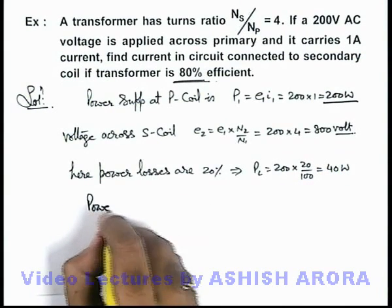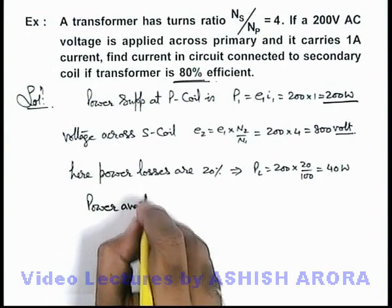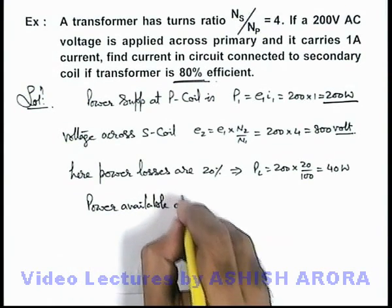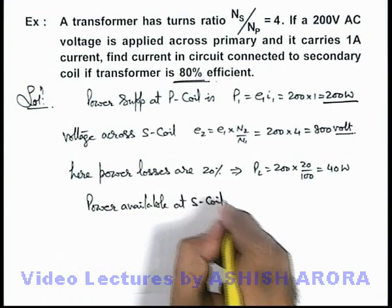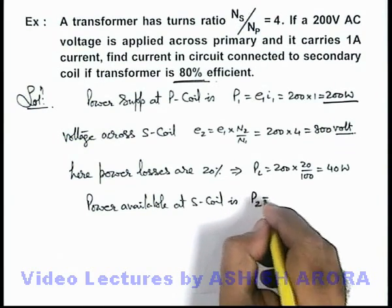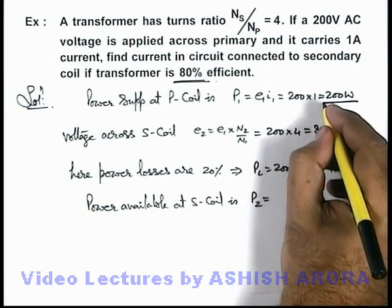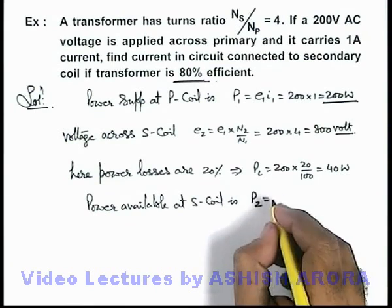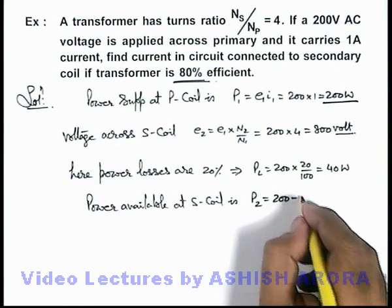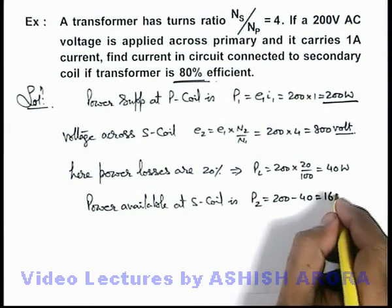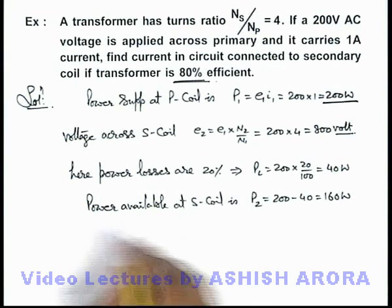We can write power available at secondary coil as P2, which will be the input power of 200 watt minus the losses of 40 watt. This is 200 minus 40, that is 160 watt.